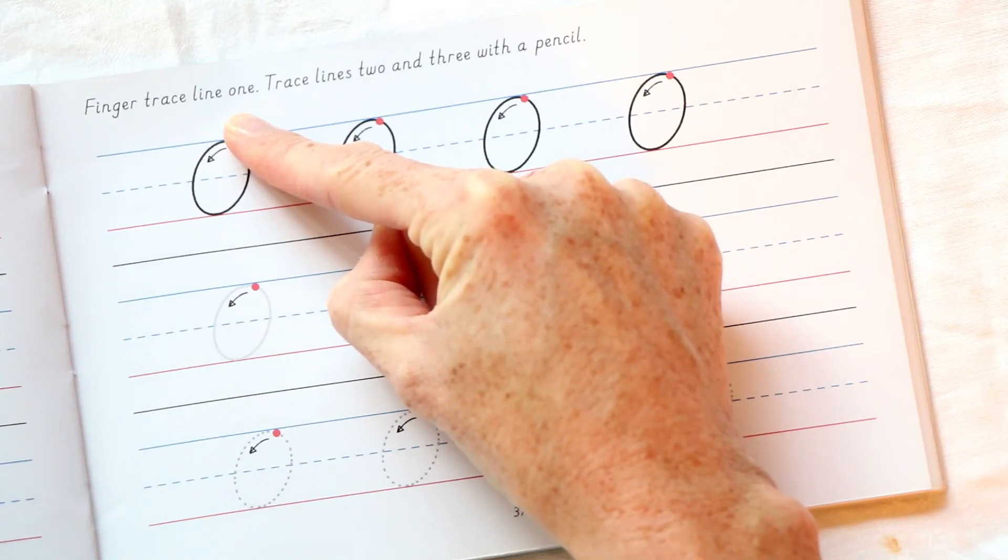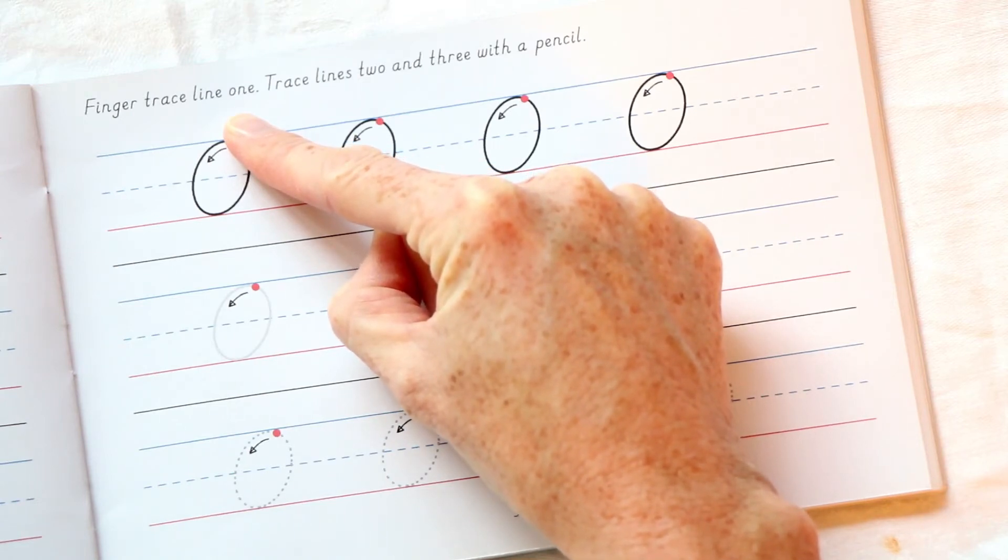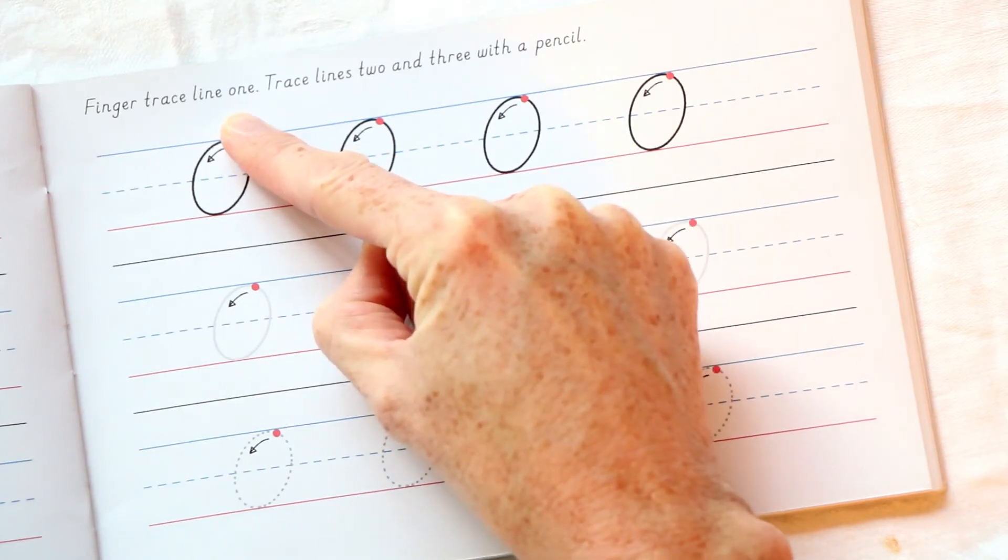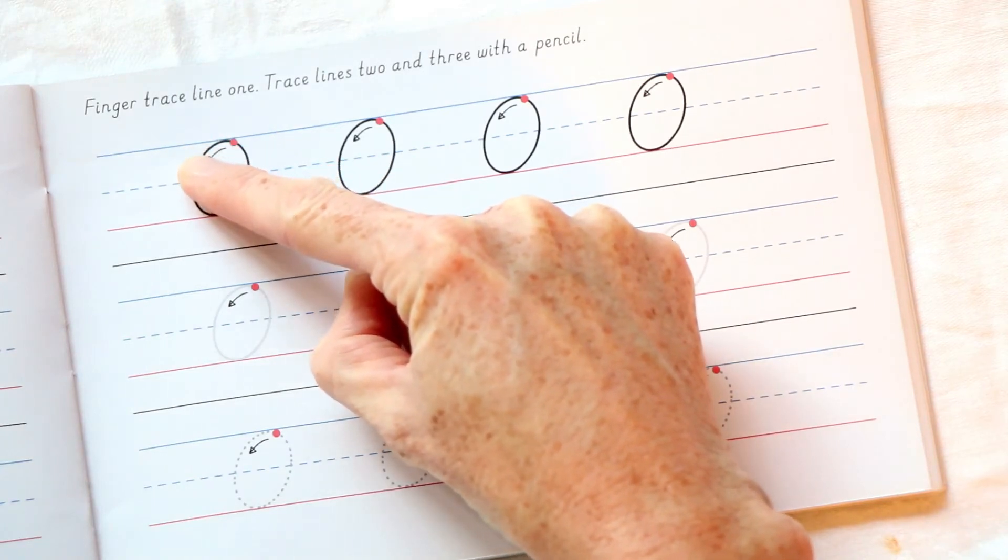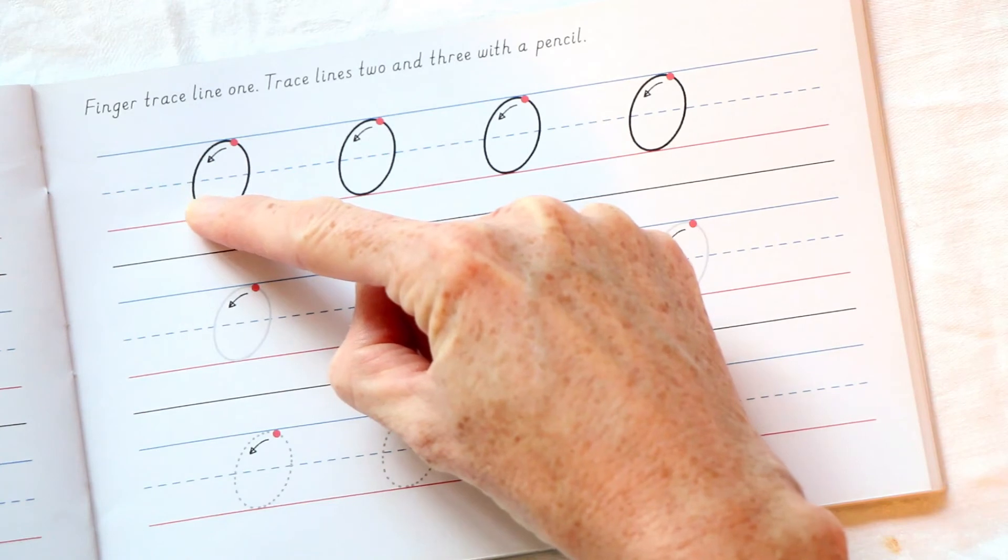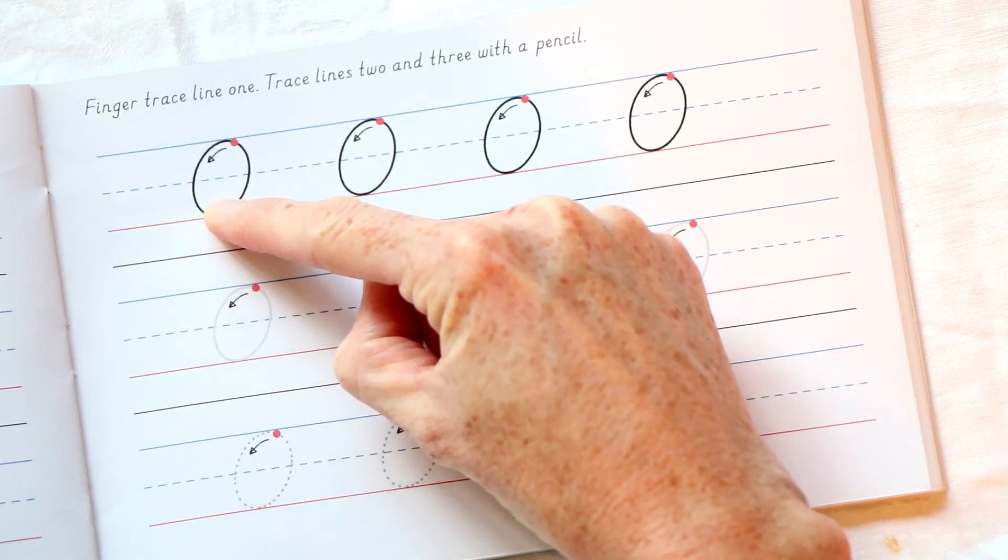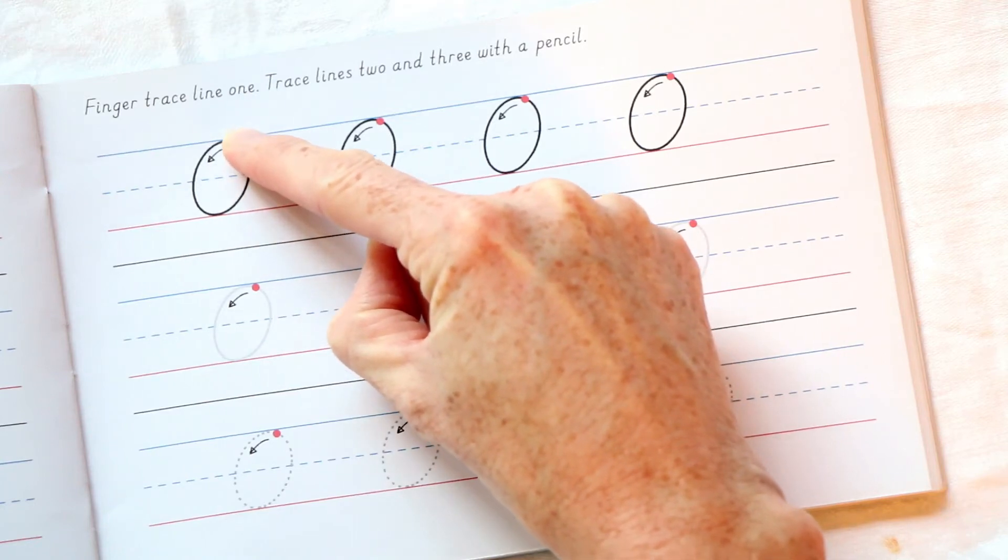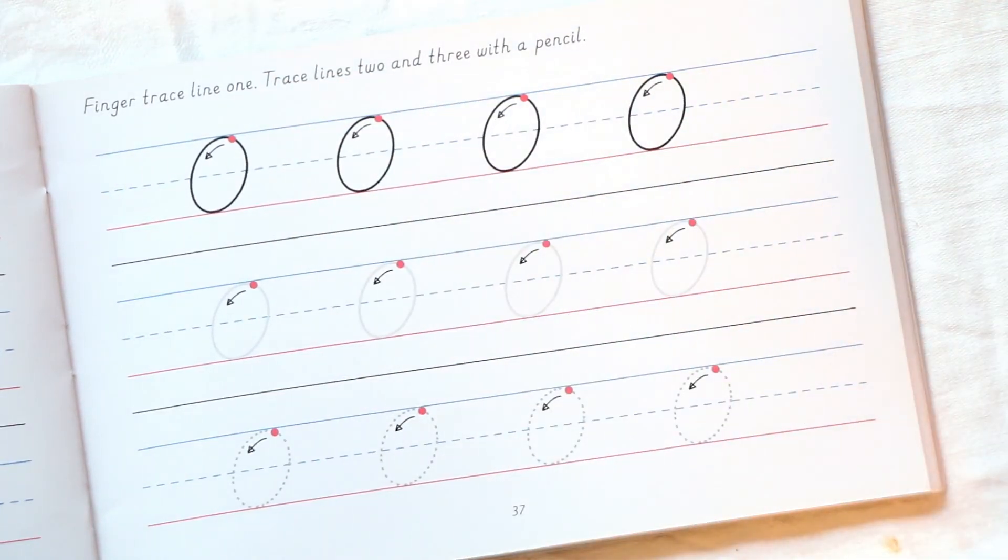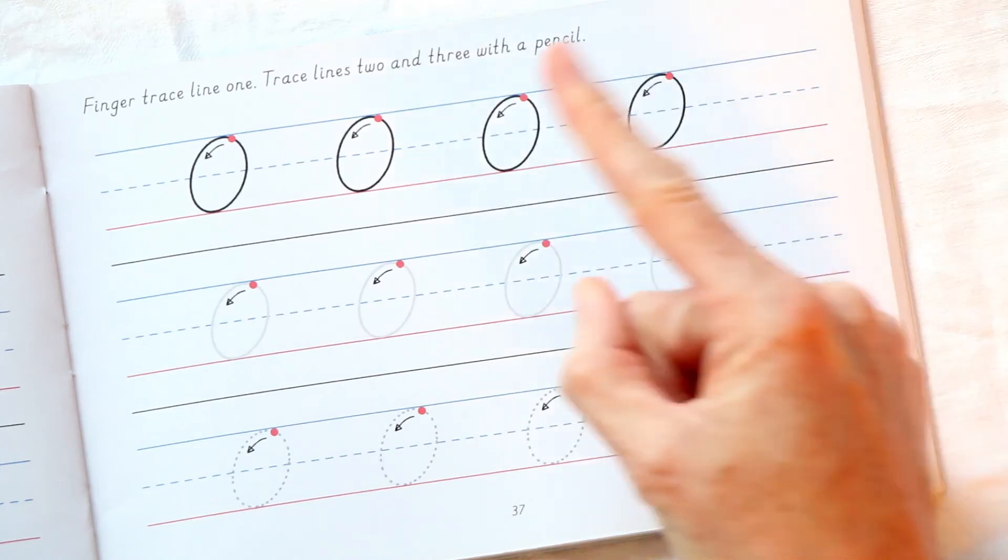Start at the starting point on the top line. We are going to curve round, past the midline, and sit on the baseline. Curve round and close at the starting point. Let's do that again.